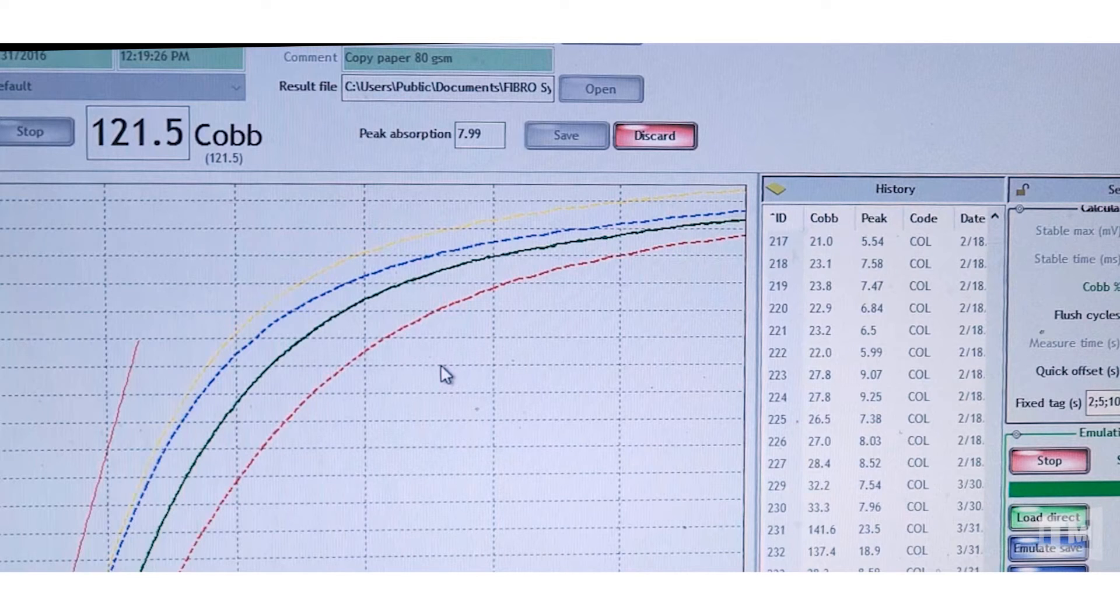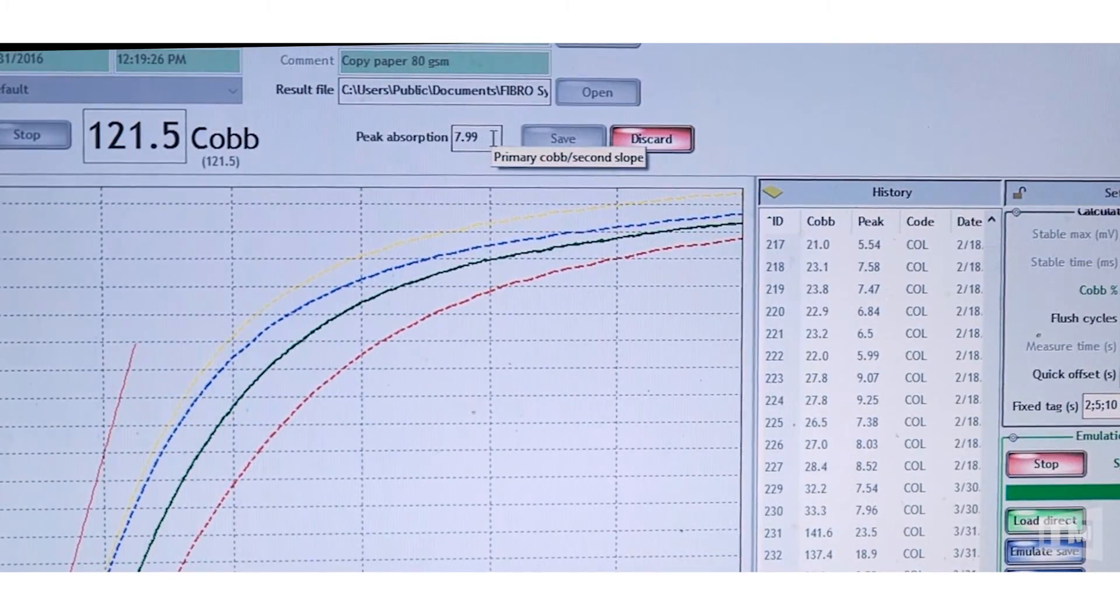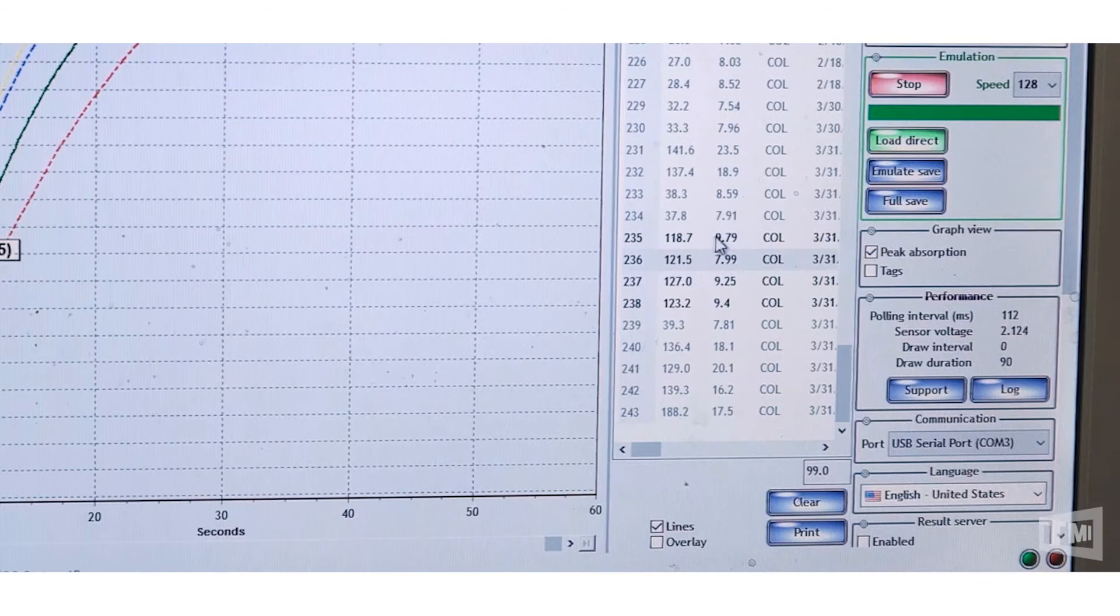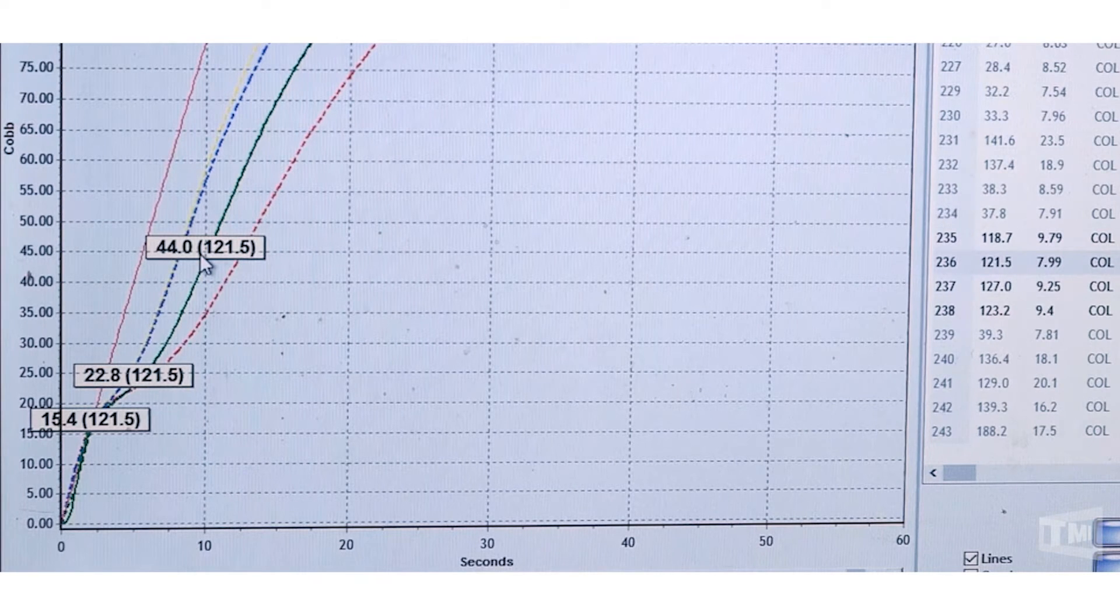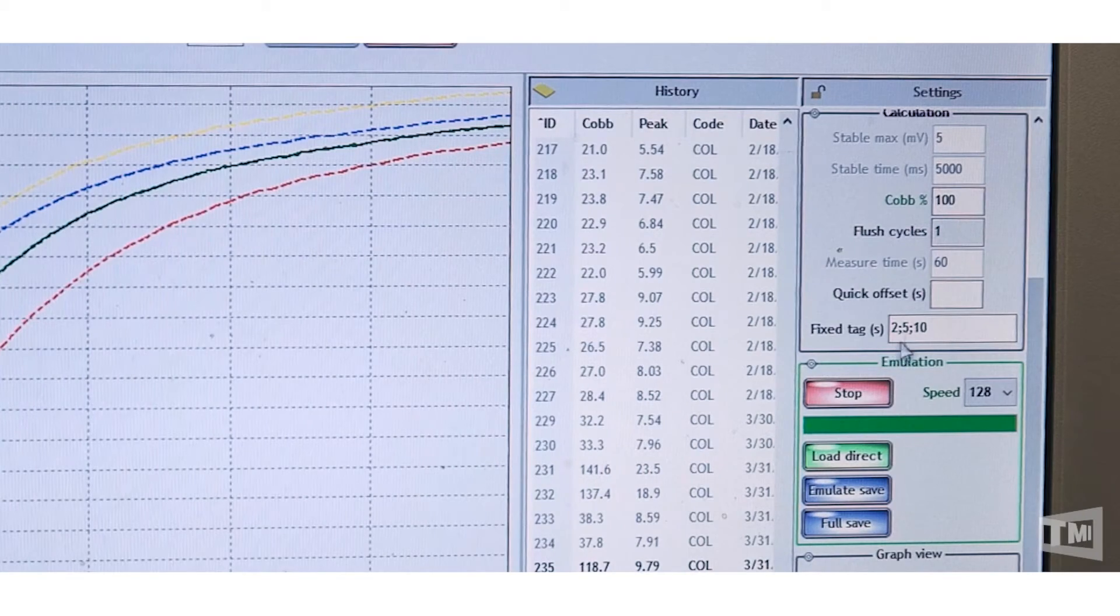In addition to what we're looking at here, as we did in the 30-minute Cobb, if you look at the peak absorption, they're pretty similar. There's only one that's basically off, and that's this one here, which is the one noted on the screen. And something that we can also do is, in your fixed tags, we can tag different times as the mill would like.